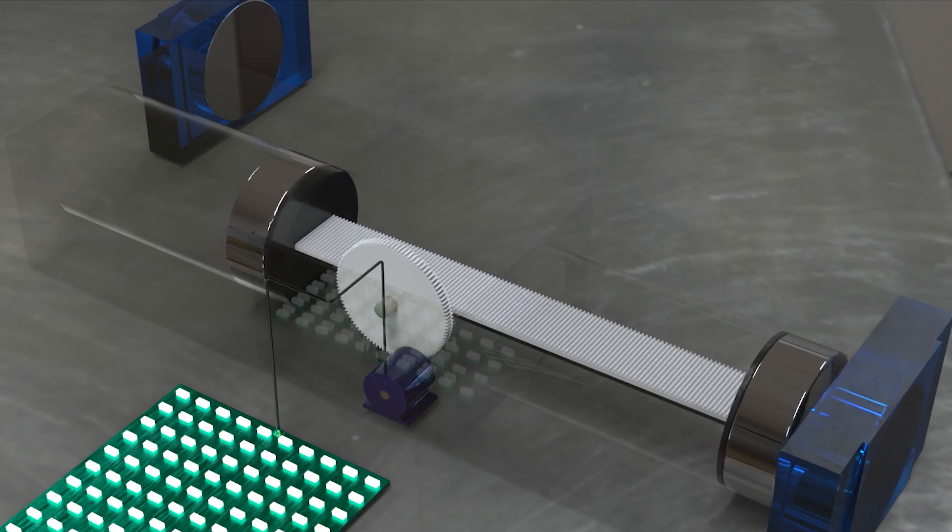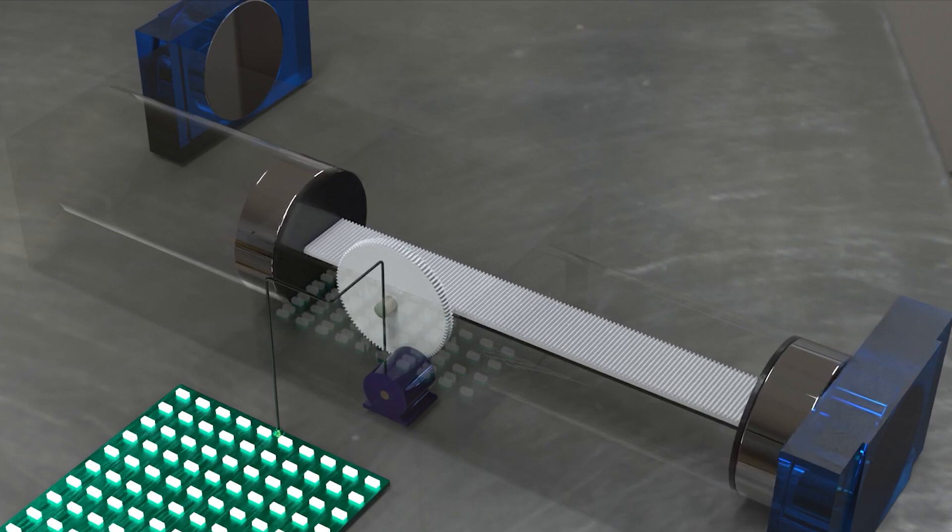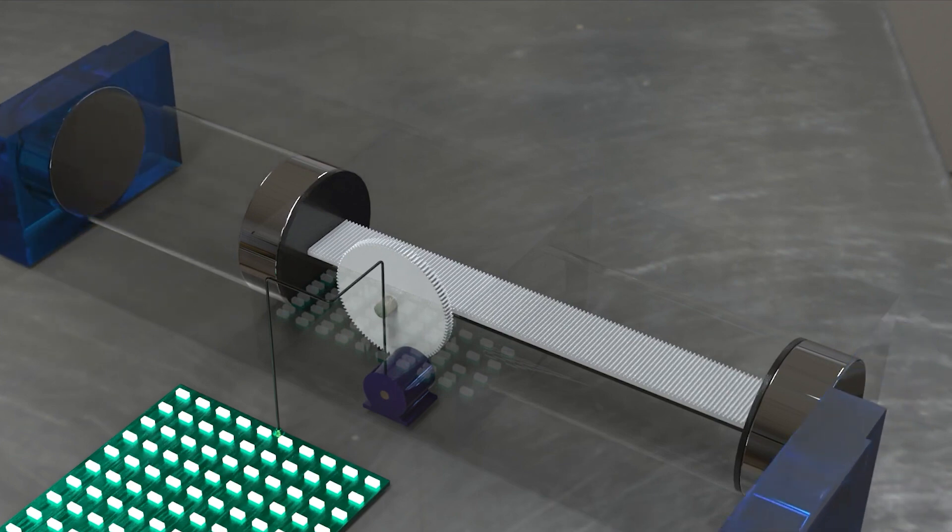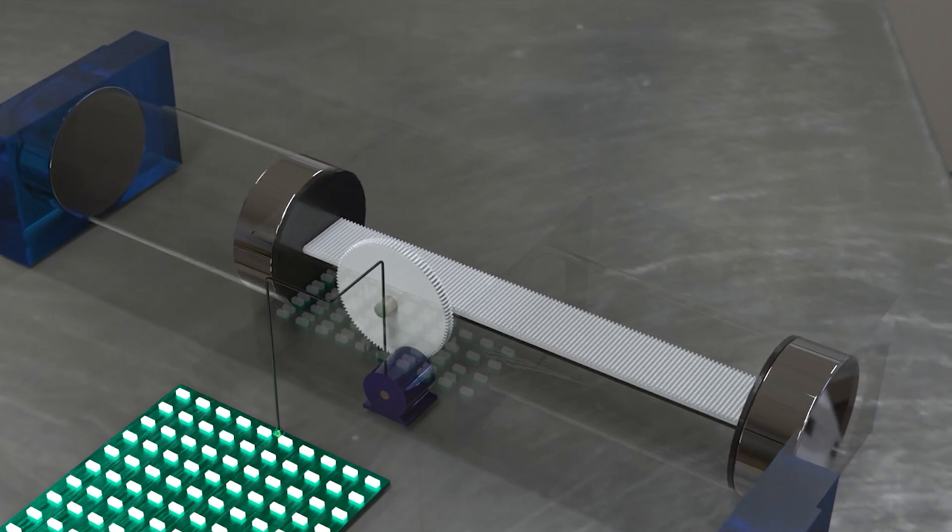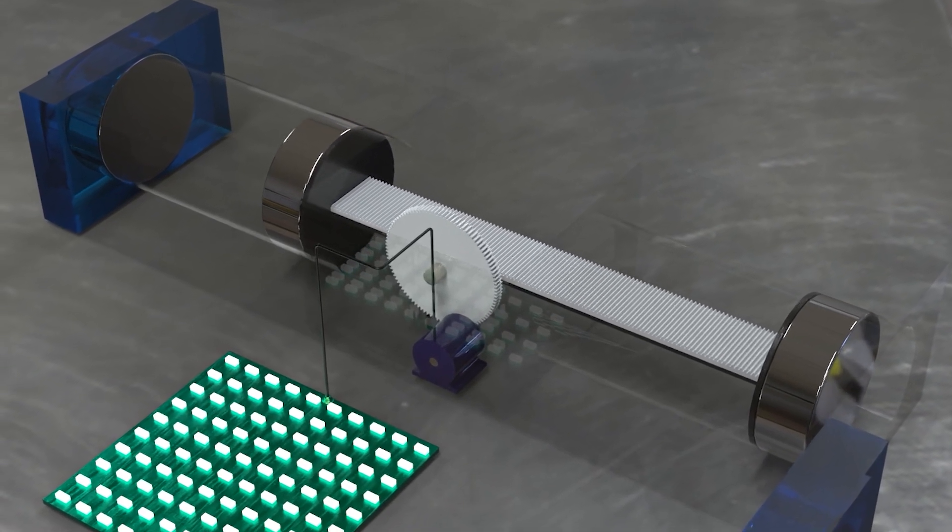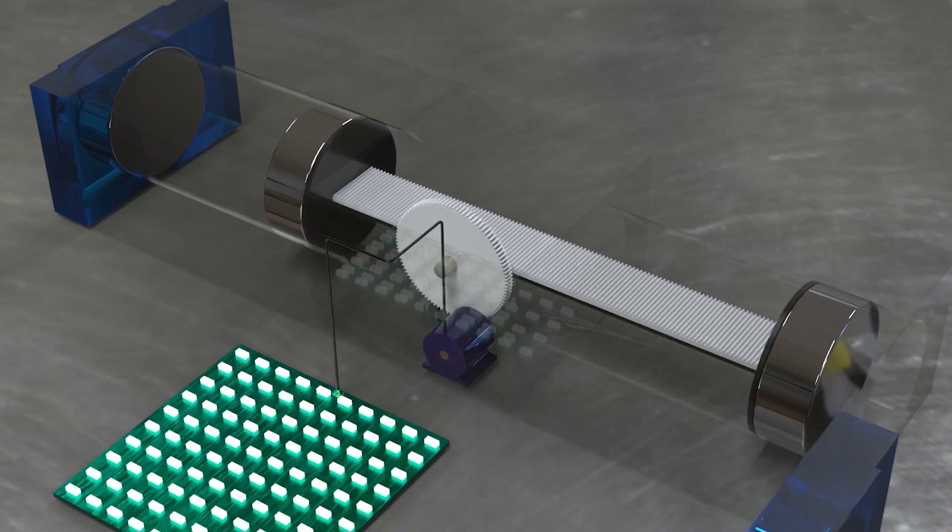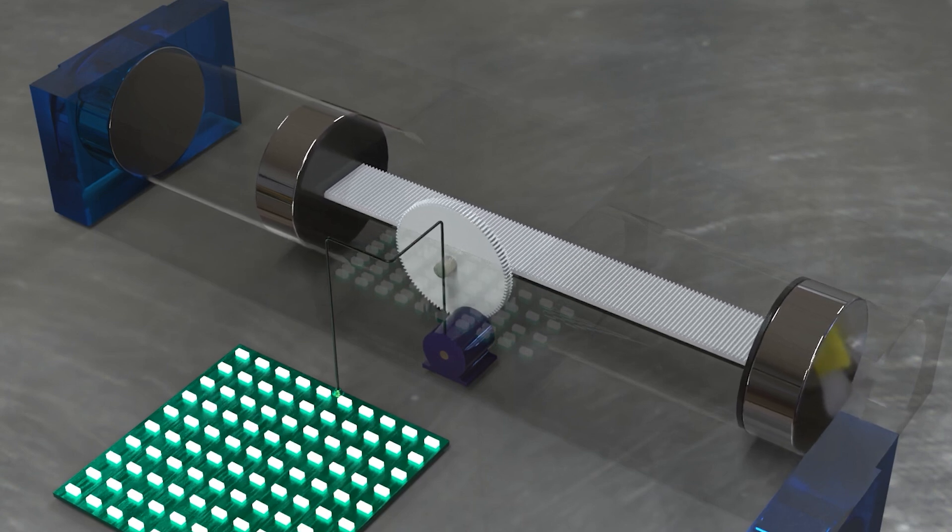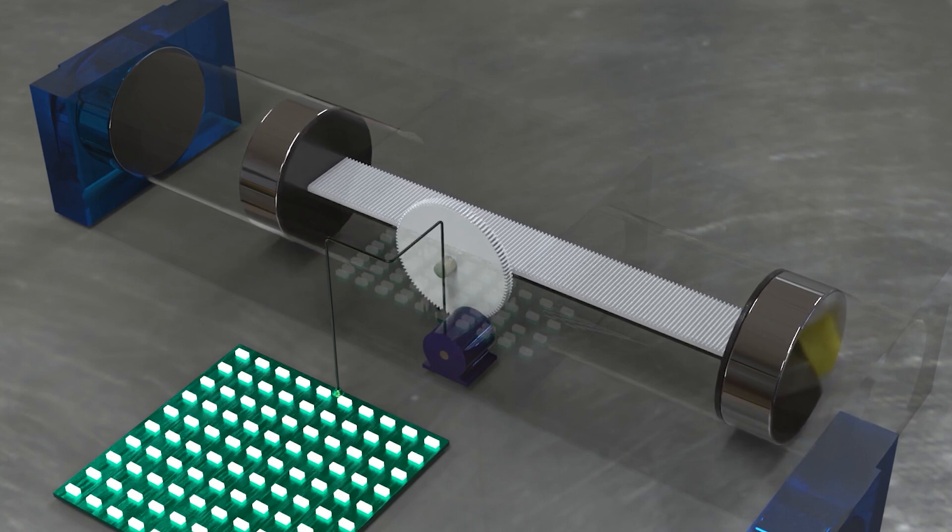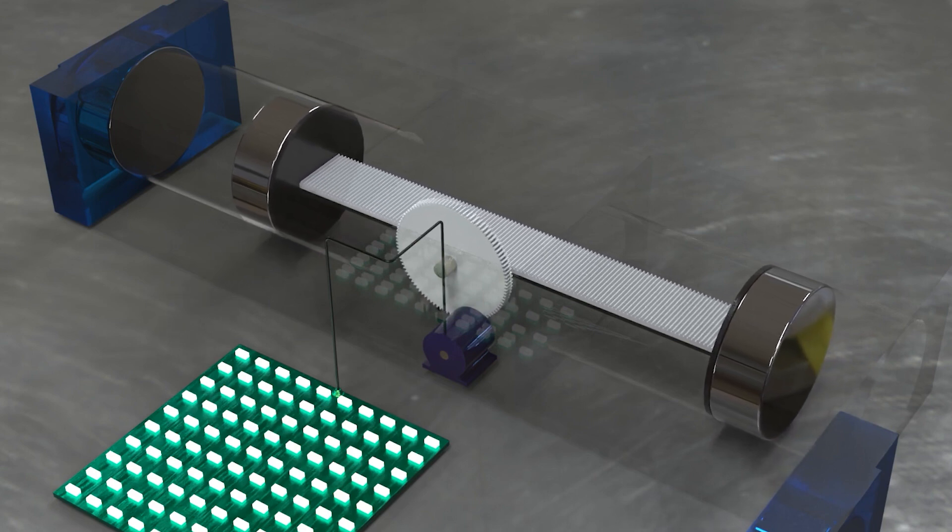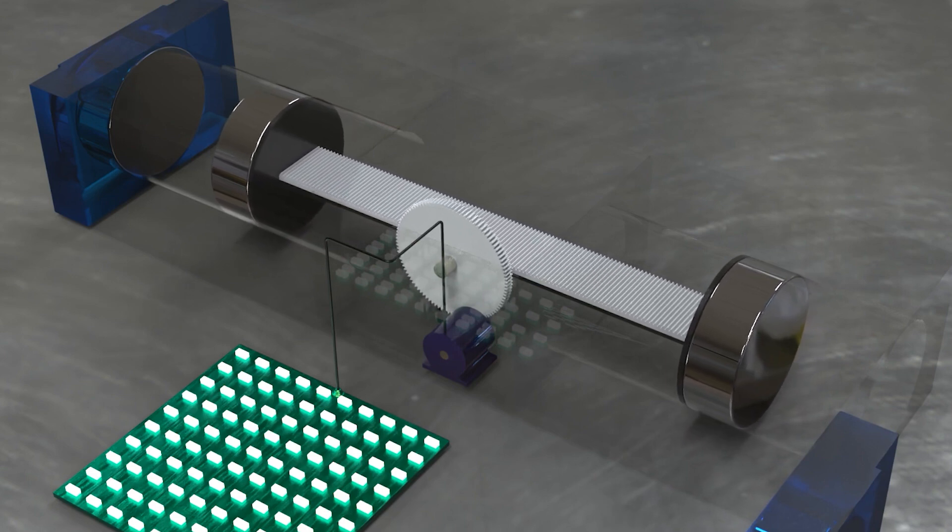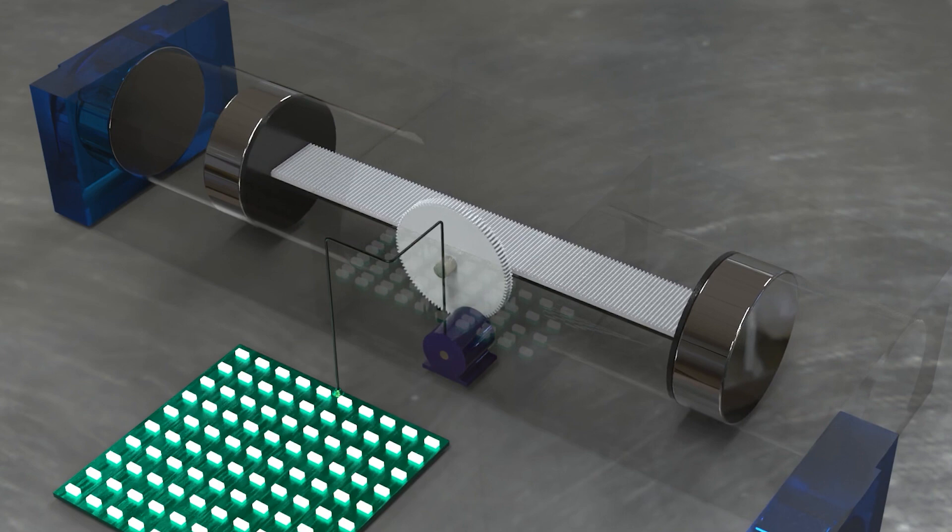When the opposite fixed magnet reaches the end of the cylinder, an undisclosed mechanism, which cannot be revealed in this video to protect its confidentiality, comes into play. This undisclosed mechanism is positioned at the end of the opposite cylinder and serves to neutralize the force exerted on the opposite magnet. By effectively countering the magnetic attraction, the mechanism allows the first fixed magnet to move with remarkable ease, requiring minimal energy input.